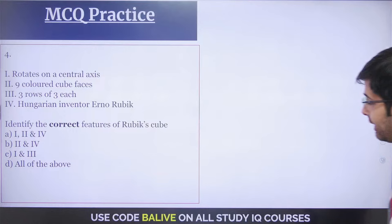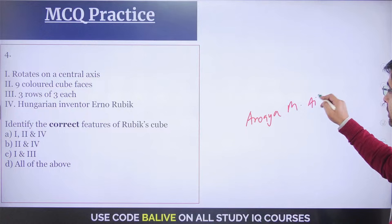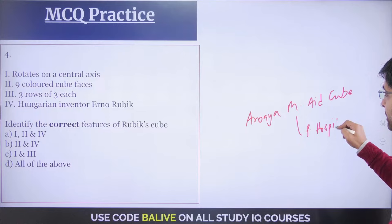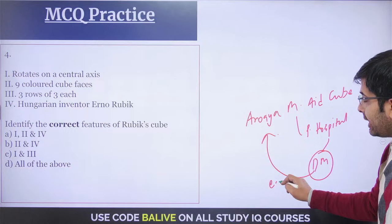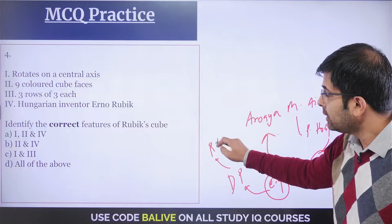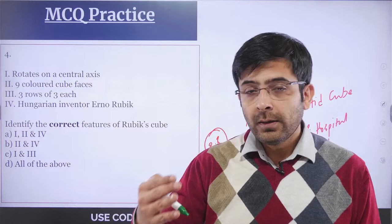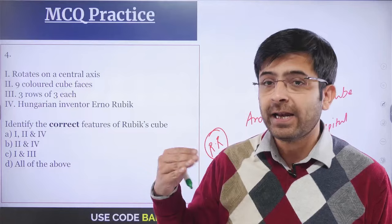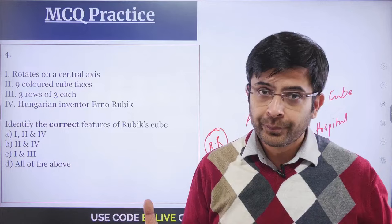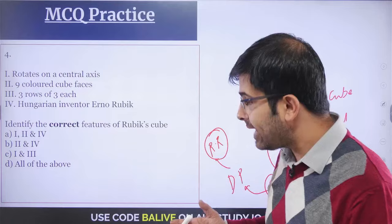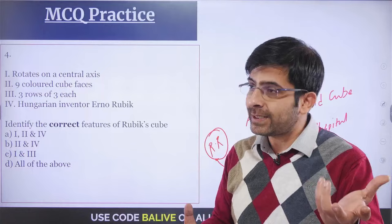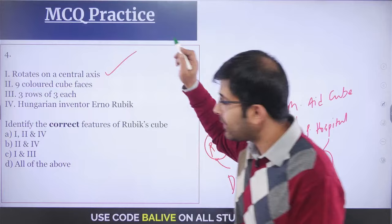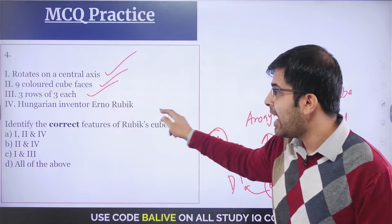We discussed the Arogya Maitri Aid Cube — a portable hospital — which is a critical example of disaster preparedness and reducing risk. It demonstrates how the government of India prepares for any disaster by having mobile first responders. It is built on the design of a Rubik's cube, which rotates on a central axis, has nine colored cube faces in three rows of three, and was invented by Hungarian inventor Ernő Rubik. All options are correct here — answer D.